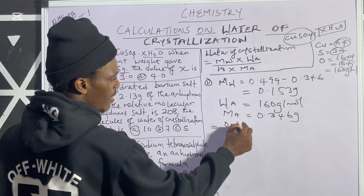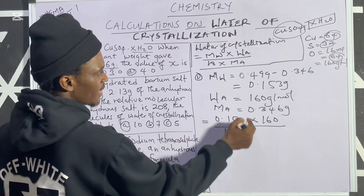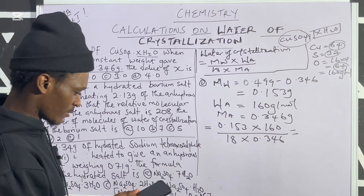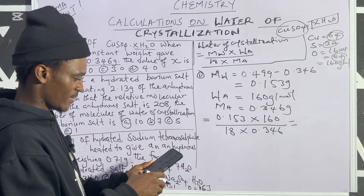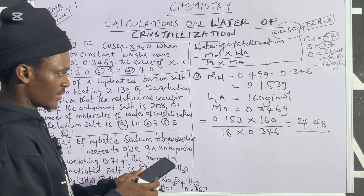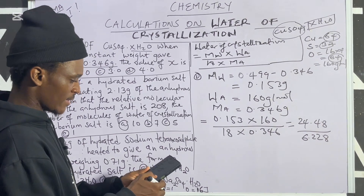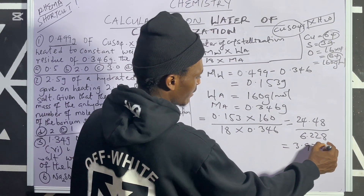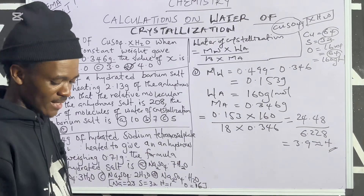Now we apply the formula. Mass of water is 0.153; weight of anhydrous is 160; mass of anhydrous is 0.346. So: (0.153 × 160) / (18 × 0.346) = 24.48 / 6.228 = 3.9, approximately 4. So our correct option is option D, which is 4. That's the answer to question one.